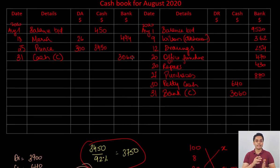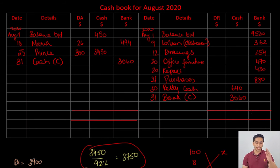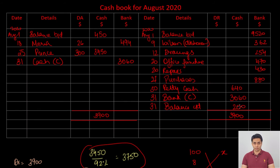Once all transactions are done, balance the cashbook. For the cash column: total both sides at $3900. The balance carried down on August 31 is 3900 − 640 − 3060 = $200, which is correct — we paid everything into bank except $200. If you get any other figure, you've made an error.